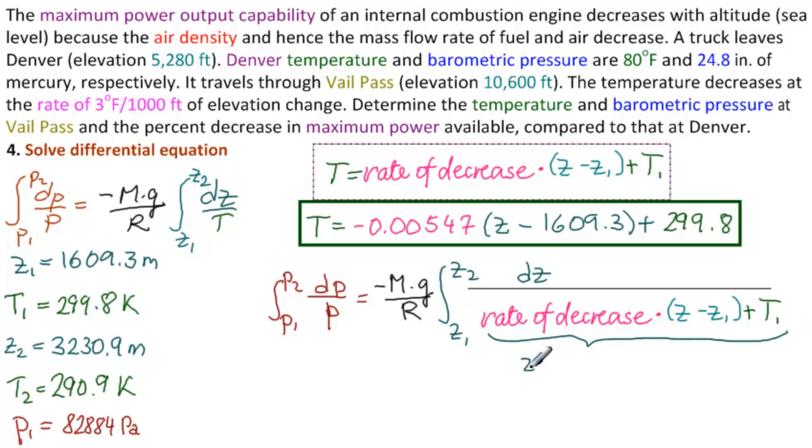Now before we integrate we have to remember that this is our line right here. If we substitute z1 what do we get? This is 0 we get t1. If we substitute z2 what do we get? Z2 that's how we got t2. So if we substitute into this part down here z1 we get t1. If we substitute into this part down here z2 we get t2.